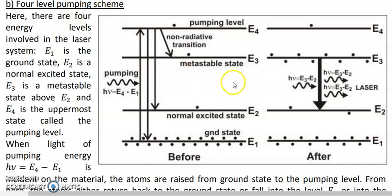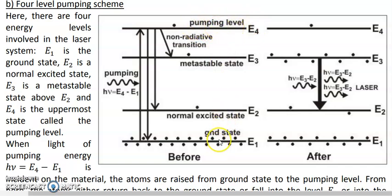In the four level pumping scheme, as the name suggests, there are four energy levels. E1 is the ground state. E2 is a normal excited state above the ground state. E3 is a metastable state above E2. E4 is the pumping level — the highest energy level. E3 is metastable, while E2 and E4 are normal excited states. Before pumping begins, E1 is highly populated and there are negligible numbers of atoms in E2, E3, or E4.